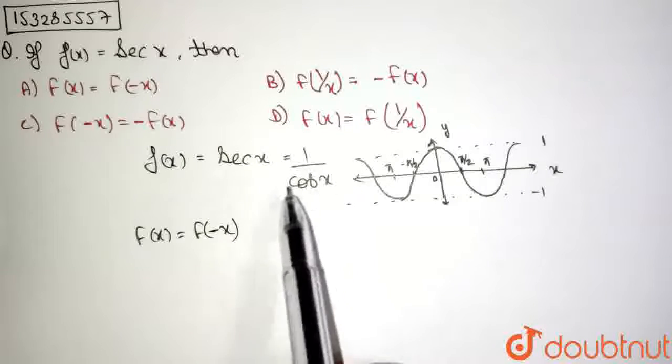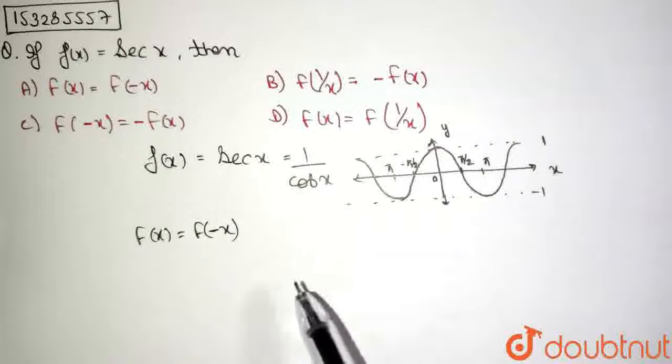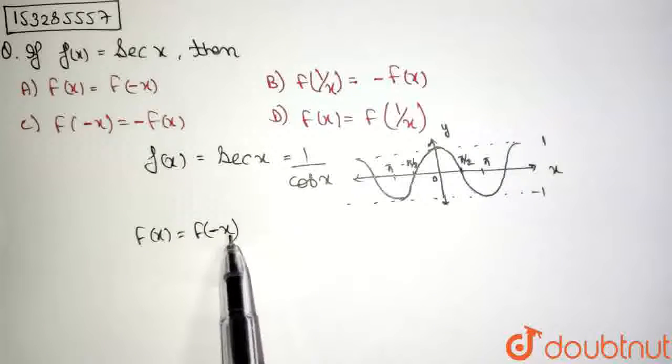And 1 by cos x, as a result, also becomes an even function. So, sec x could be called as an even function. So, f(x) equals f of minus x.